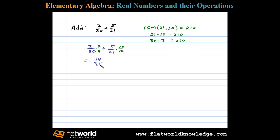14 over 210 plus 50 over 210. Once you have equivalent fractions with a common denominator, you can simply add the numerators together. So we have 64 over 210, and we've added the fractions. At this point, we need to